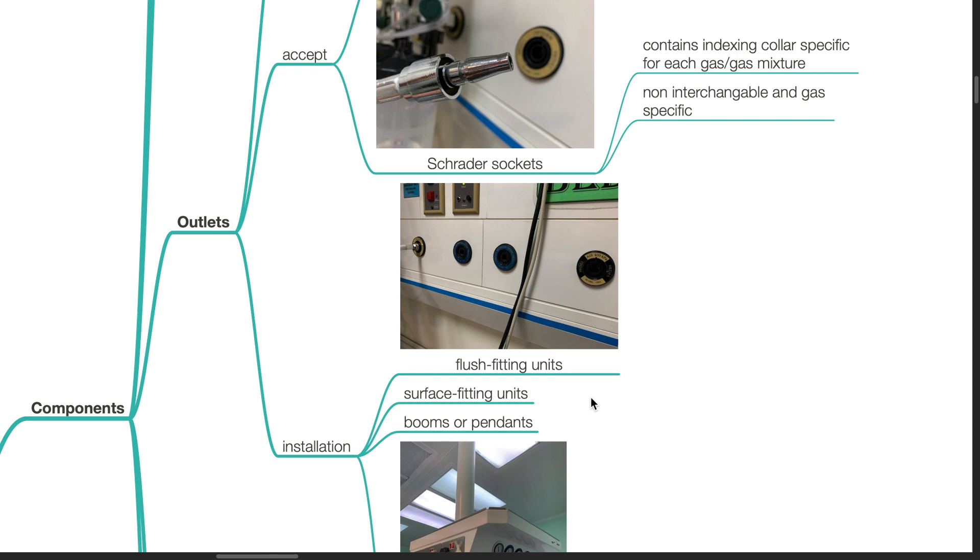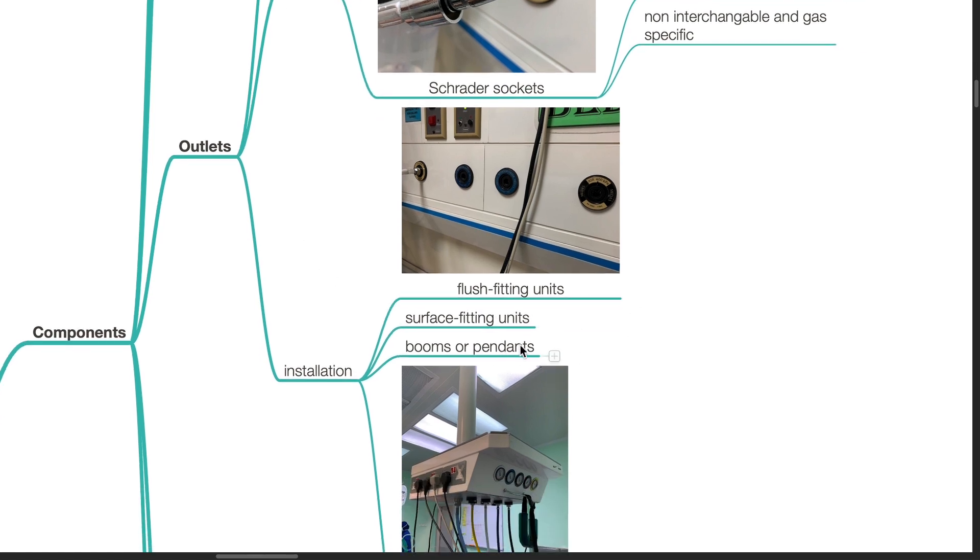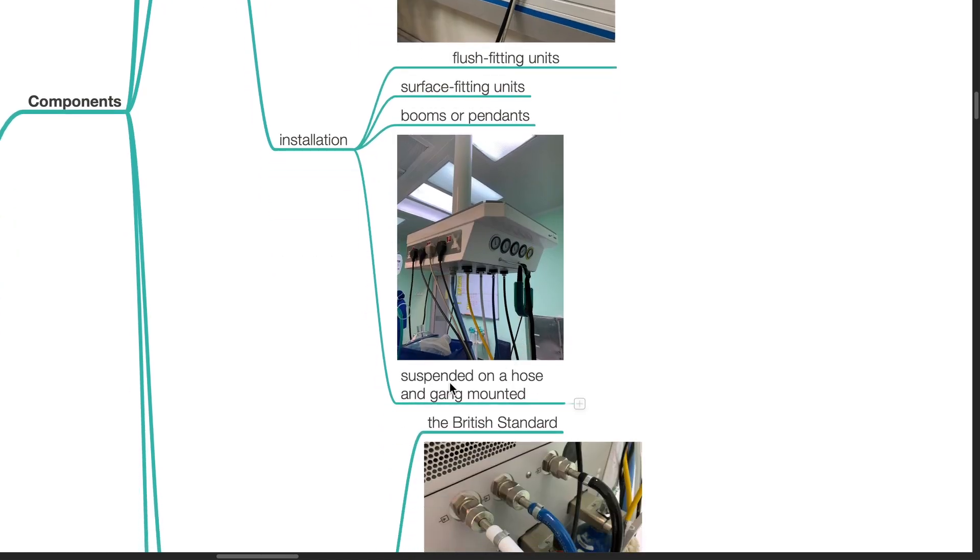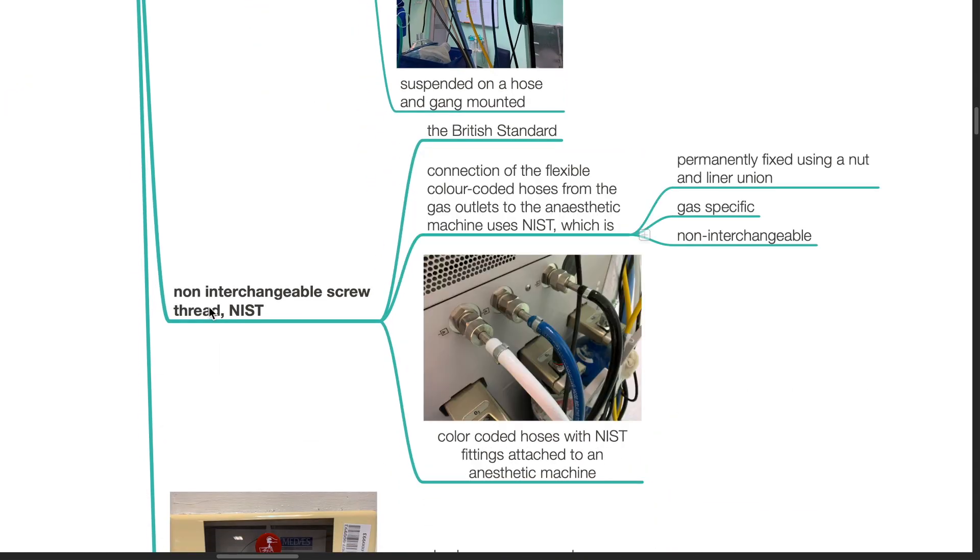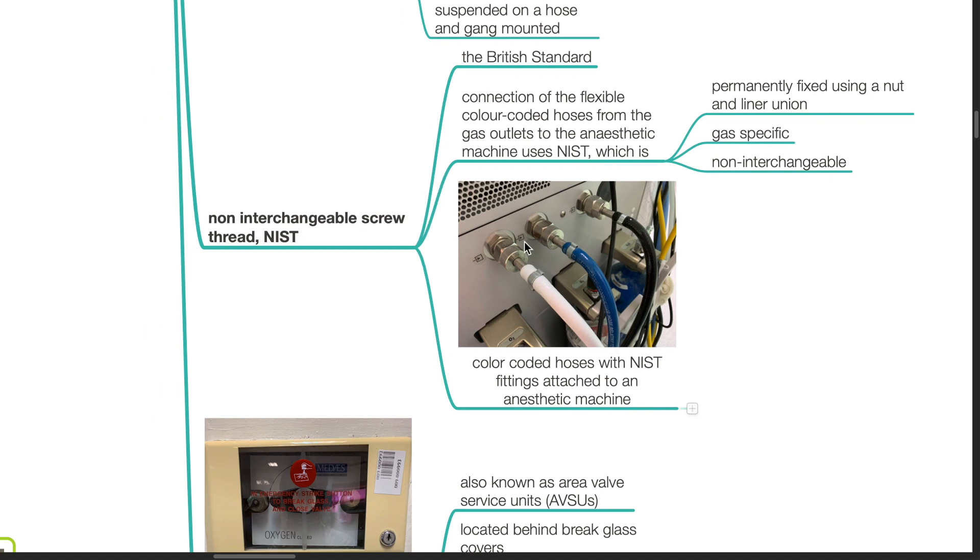Installation: These outlets could be flush fitting units, surface fitting units, booms or pendants, or suspended on a hose and gang mounted. Non-interchangeable screw thread or NIST is the British standard. Connection of the flexible color coded hoses from the gas outlets to the anesthetic machine uses NIST, which is permanently fixed using a nut and liner union. It is gas specific and non-interchangeable. This picture shows color coded hoses with NIST fittings attached to an anesthetic machine.